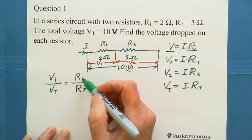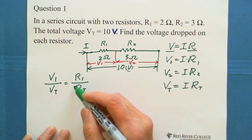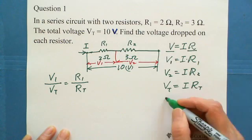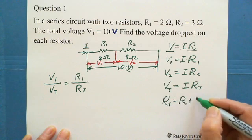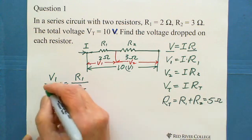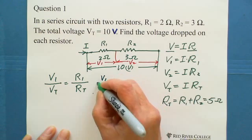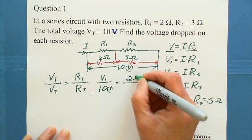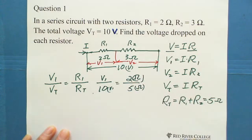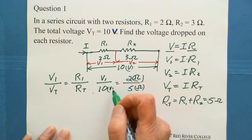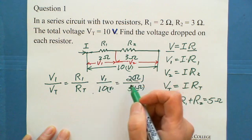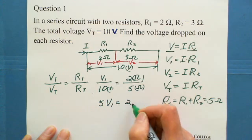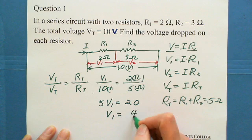We have R1, we have V total, and we are looking for V1. What is R total? In series circuits the resistors add together, so R total equals R1 plus R2, which is 5 ohms. We substitute numbers: V1 over 10 equals 2 over 5. Cross multiplication gives 5 times V1 equals 20, so V1 equals 4 volts.